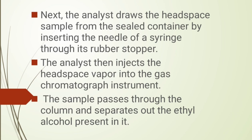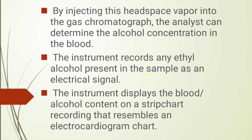The analyst injects the headspace vapor into the gas chromatograph instrument. The sample passes through the column and separates out the ethyl alcohol present. The instrument records the ethyl alcohol present in the sample and gives an electrical impulse or signal. The instrument displays the blood alcohol content on a strip chart recording that resembles an electrocardiogram chart.